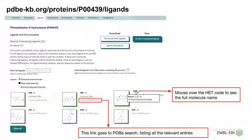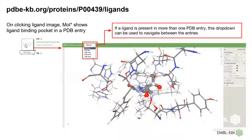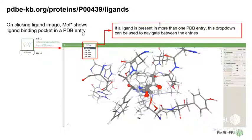If you hover over the ligand code, you can see the full molecule name. You can also see how many PDB entries the ligand is found in, and this link gives you PDB search results listing all those PDB entries. Each image in the ligand gallery is linked to a 3D visualization. On clicking on the ligand image, you will see a modal window opening showing you the ligand binding pocket. If a ligand is bound in more than one entry, you have a dropdown menu and can navigate between various PDB entries.